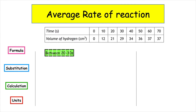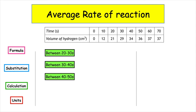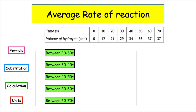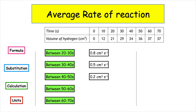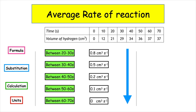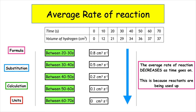Pause the video and have a go at calculating the average rate of reaction for the following intervals. Once you're ready, press resume and the answers will pop up on the screen. From the results we can see that the average rate of reaction decreases as time goes on, because the reactants are being used up.